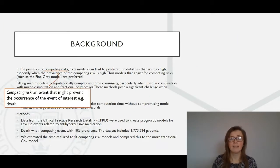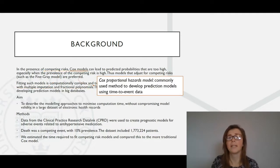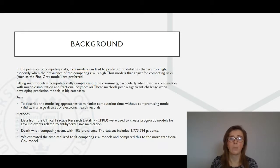So a competing risk is any event that occurs prior to the event of interest in an analysis that may prevent the event of interest from occurring. In the presence of competing risks, the Cox proportional hazards model, which is the most commonly used method to develop prediction models when using time to event data, can over predict the probability of the event of interest occurring.